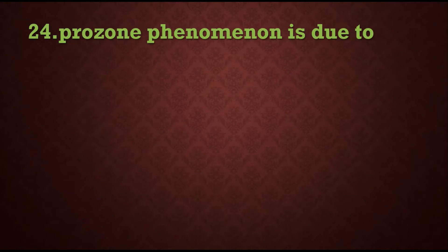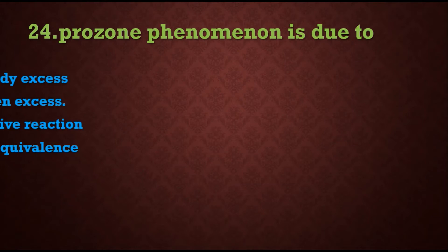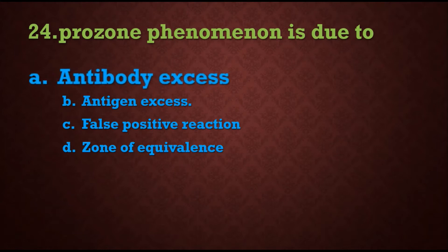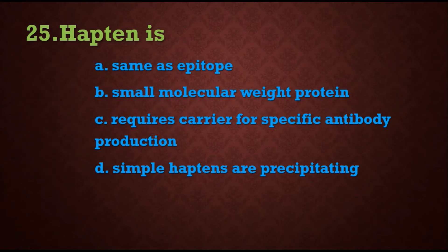Question 24: Prozone phenomenon is due to — options are: A) antibody excess, B) antigen excess, C) false positive reaction, D) zone of equivalence. Prozone means antibody excess, so the answer is A) antibody excess.